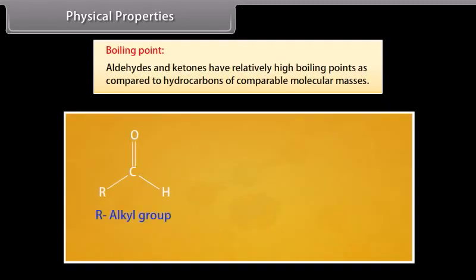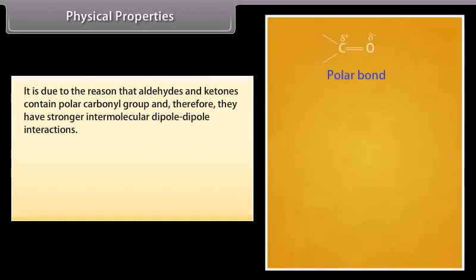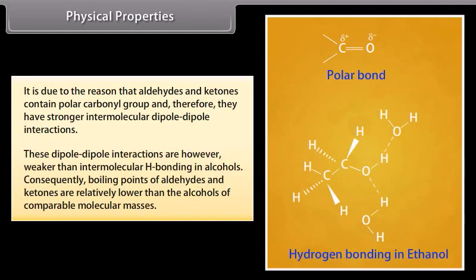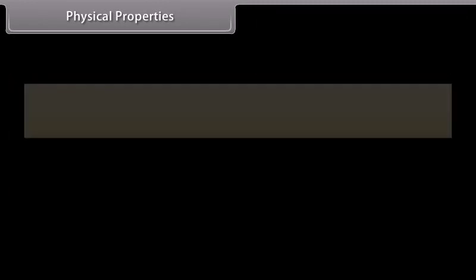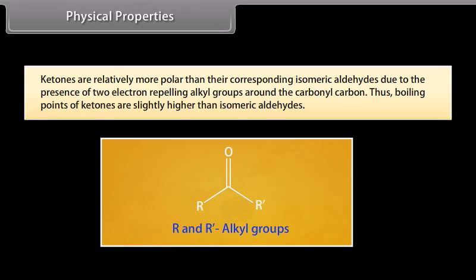Boiling point: aldehydes and ketones have relatively high boiling points as compared to hydrocarbons of comparable molecular masses. This is because aldehydes and ketones contain a polar carbonyl group and therefore have stronger intermolecular dipole-dipole interactions. These dipole-dipole interactions are however weaker than intermolecular hydrogen bonding in alcohols, so boiling points of aldehydes and ketones are relatively lower than alcohols of comparable molecular masses. Ketones are relatively more polar than their corresponding isomeric aldehydes due to two electron-repelling alkyl groups around the carbonyl carbon, so boiling points of ketones are slightly higher than isomeric aldehydes.